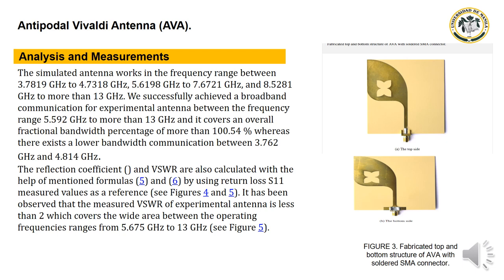Analysis and Measurement. The simulated antenna operates in the frequency ranges of 3.7819 GHz to 4.7318 GHz, 5.6198 GHz to 7.7318 GHz, and 8.2818 GHz to more than 13 GHz.